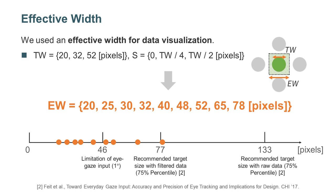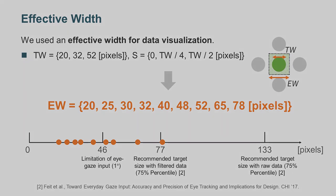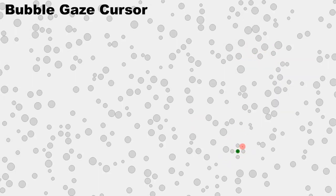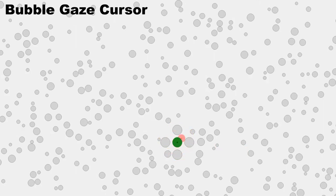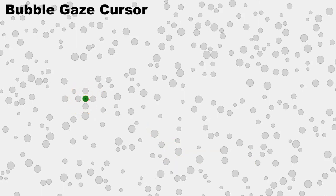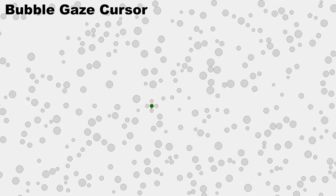These EWs are almost all smaller than the required target size of the eye gaze interface. This video shows a user actually using the bubble gaze cursor in the experiment. It can be seen from the video that selecting a small, dense target is difficult with the bubble gaze cursor technique.